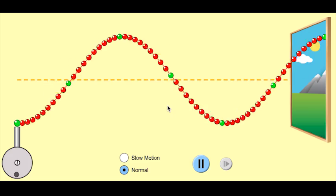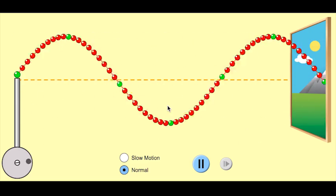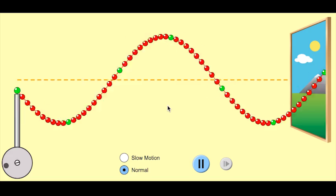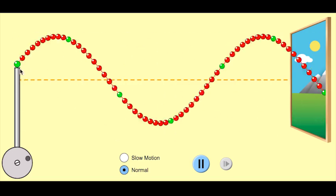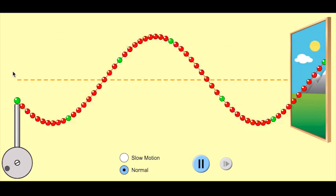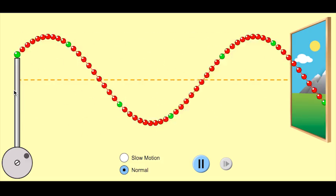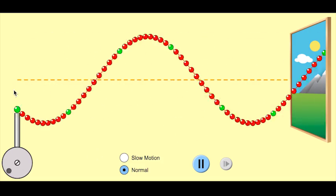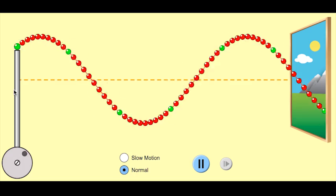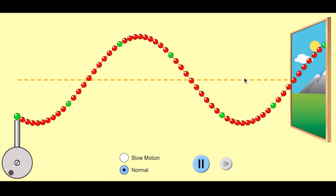The first thing you need to recognize is that a transverse wave is generated by a vibration. In this case, the vibration is this pole travelling up and down. You'll note that the vibration of the particle is actually perpendicular to the direction of the wave that's going out the window.